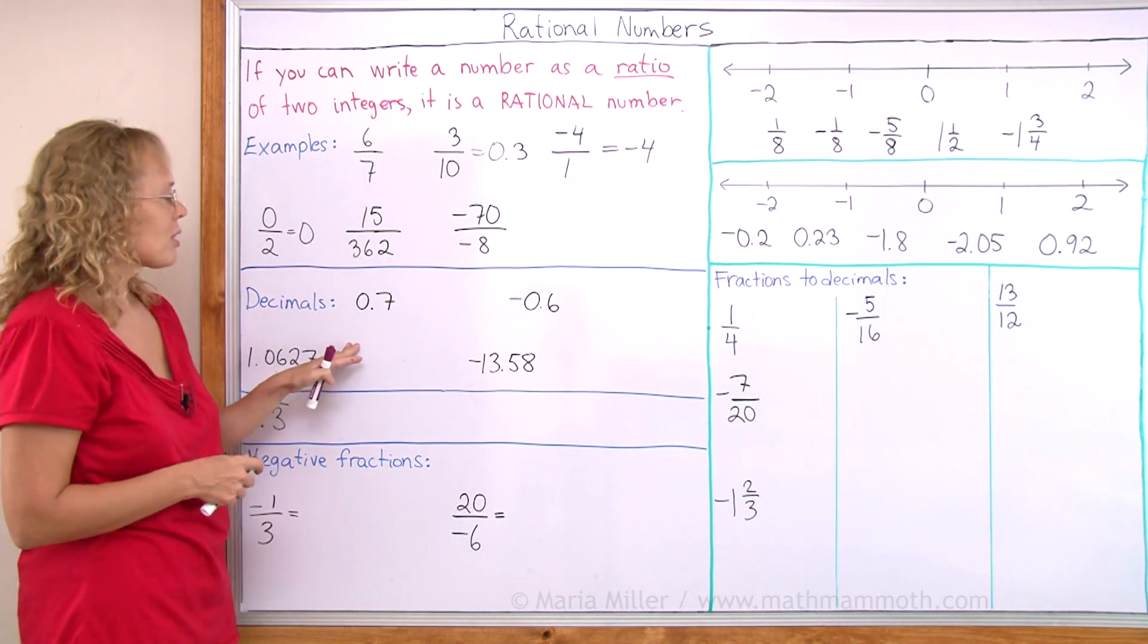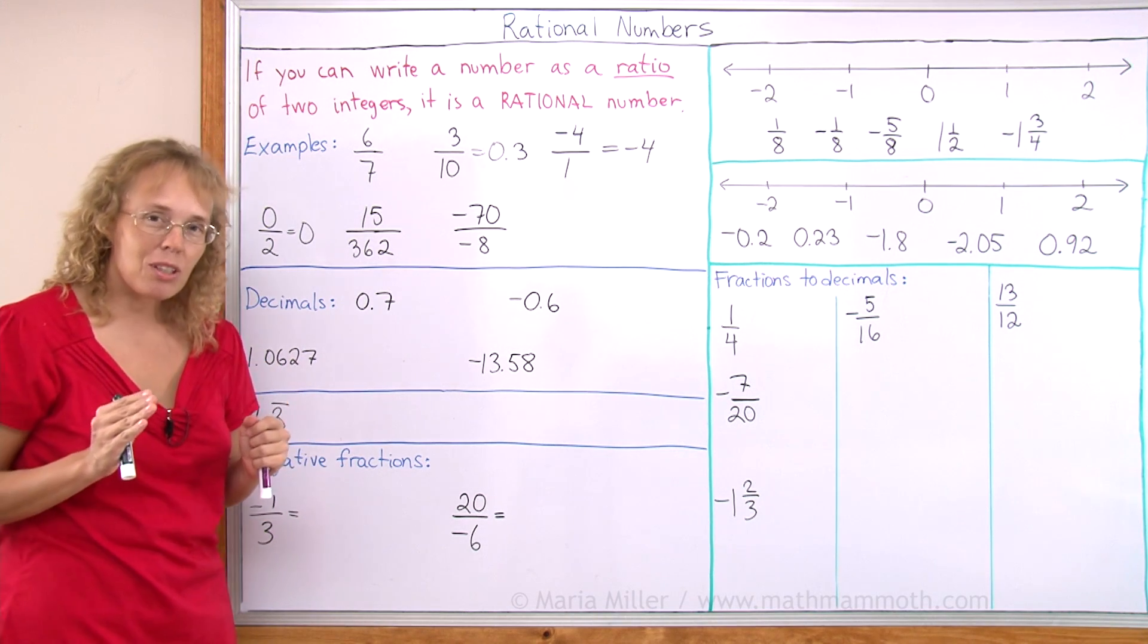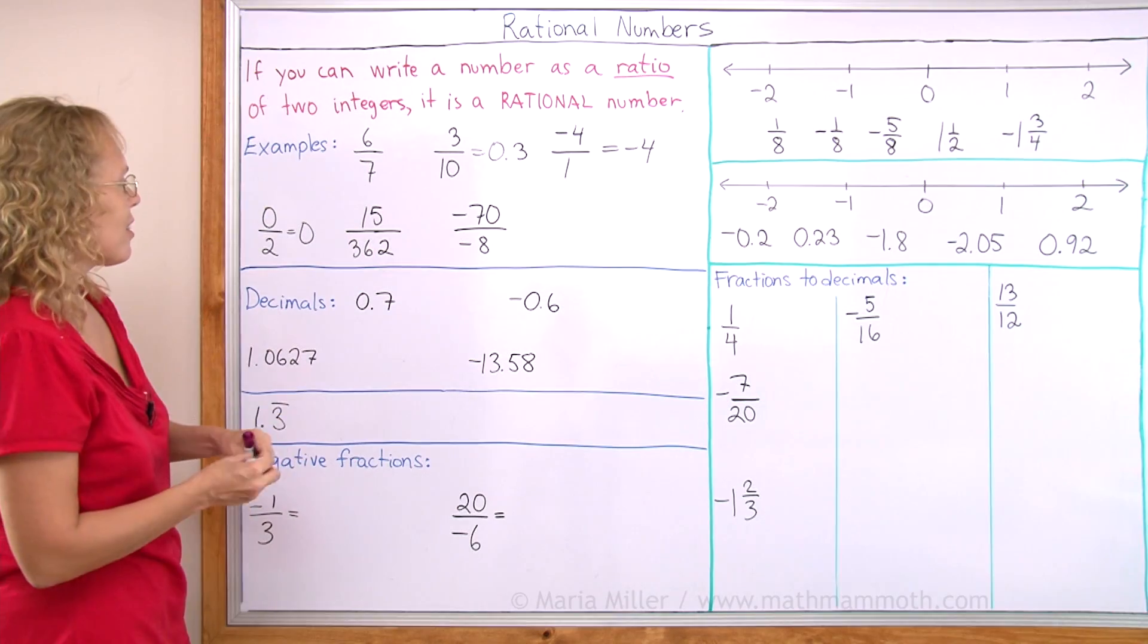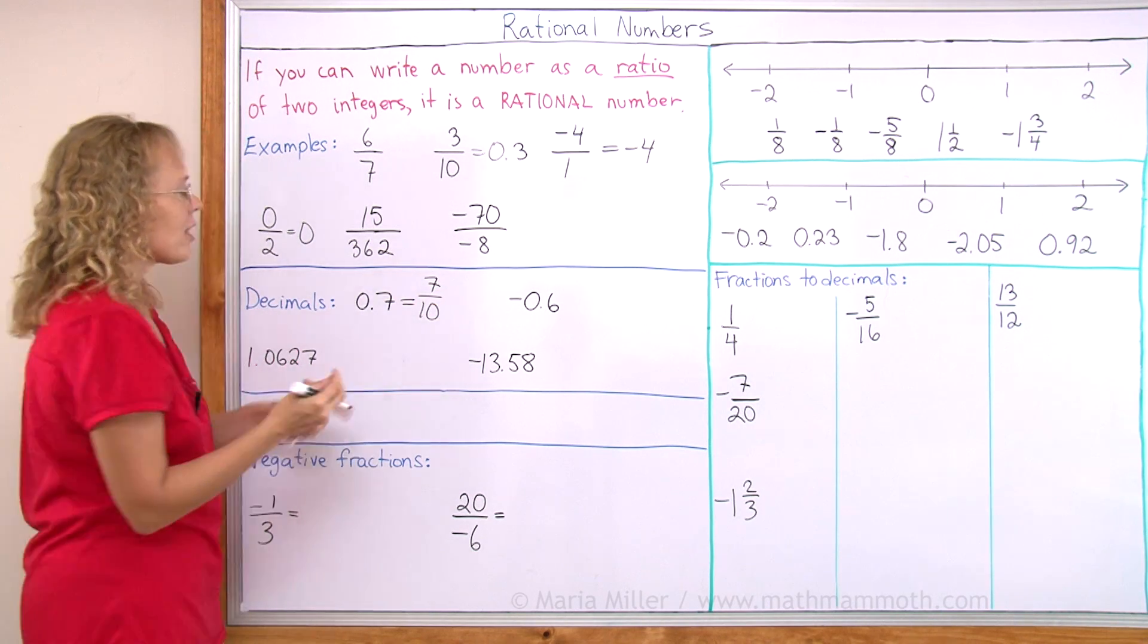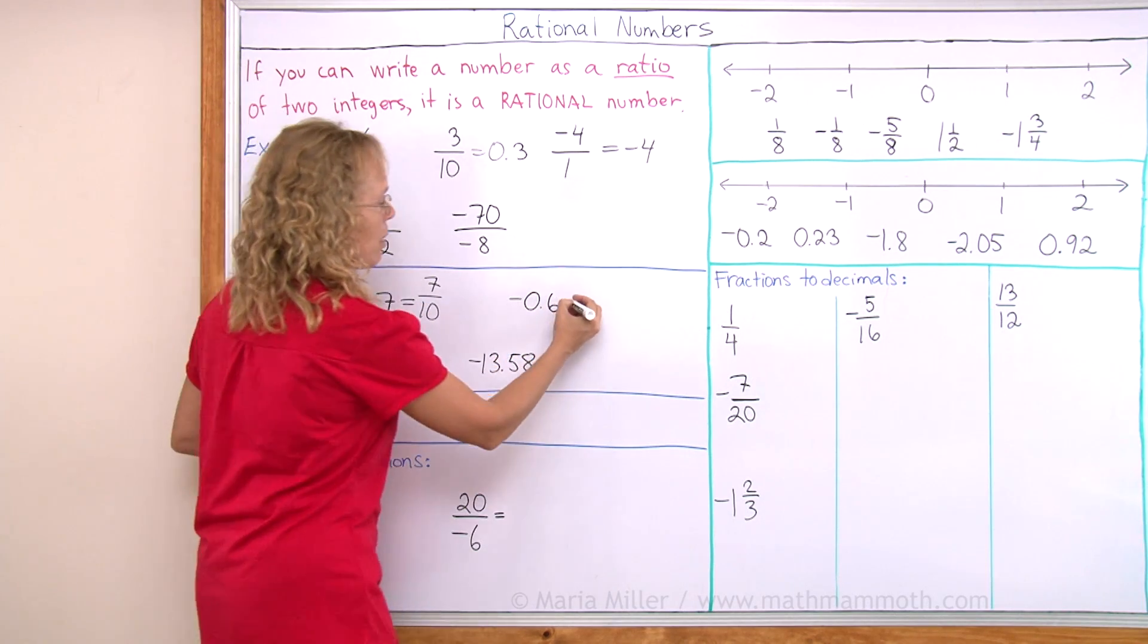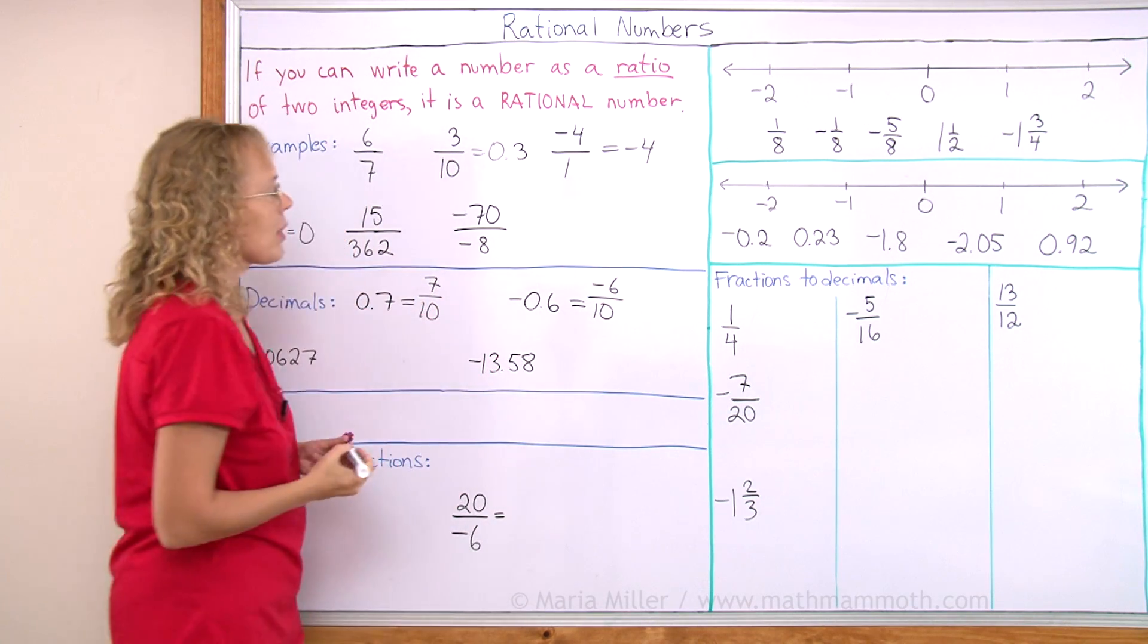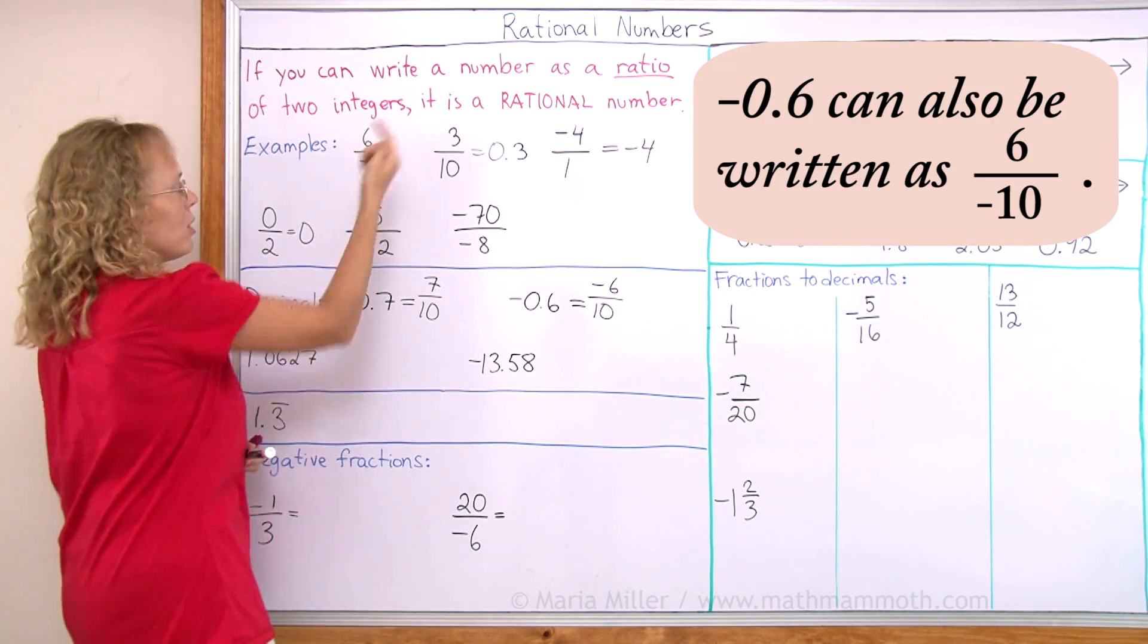Let me show you some examples. Here's decimal numbers that are all rational numbers. There do exist some decimal numbers that are not rational, but that's not really our topic here. 0.7 - as the name indicates, it is 7 tenths. It is clearly an integer divided by an integer, or ratio of 2 integers. The same is true here. Negative 0.6 is the same as negative 6 over 10. So it is a rational number, because I was able to write it as a ratio of 2 integers.